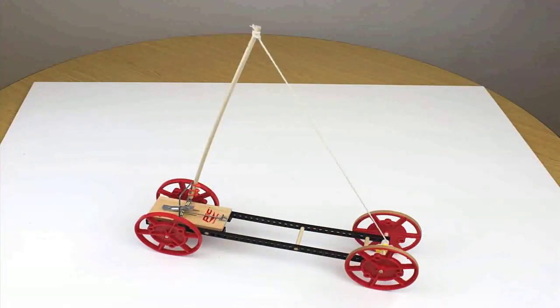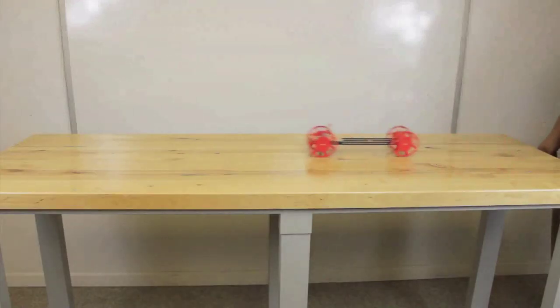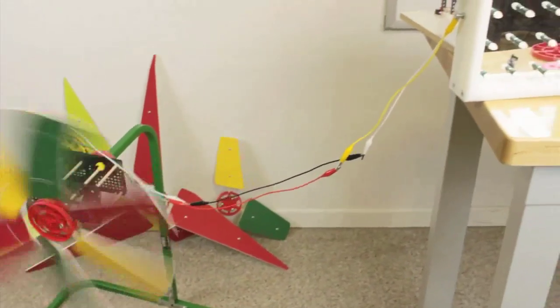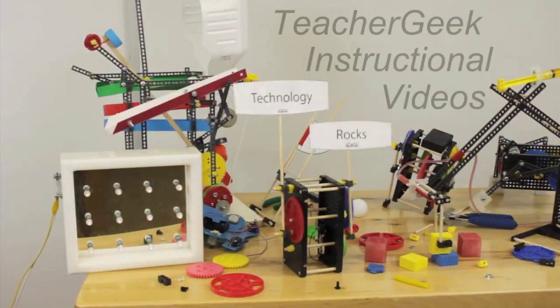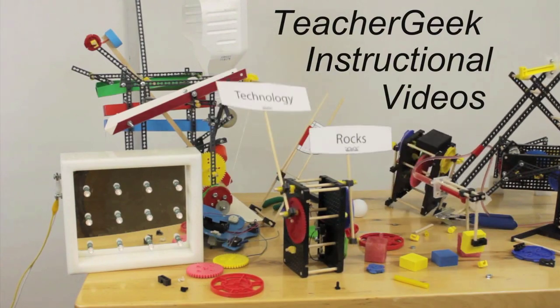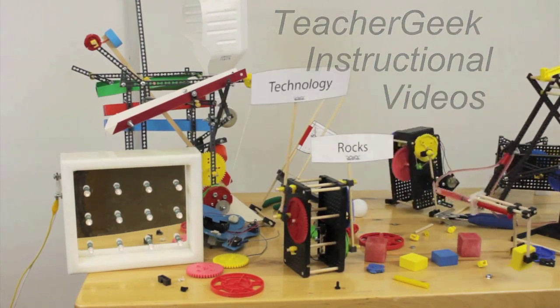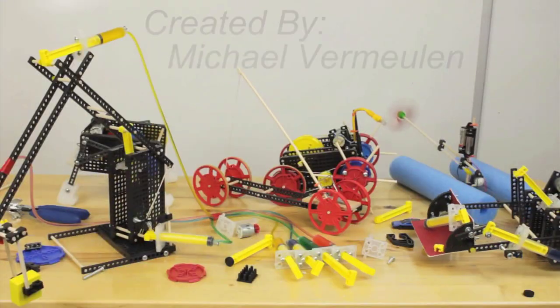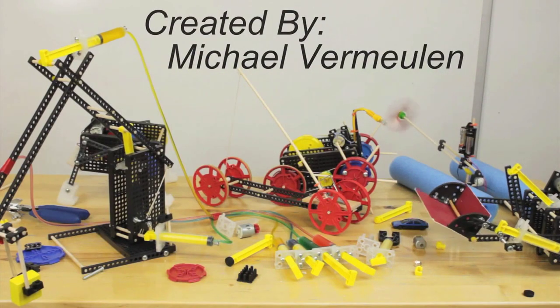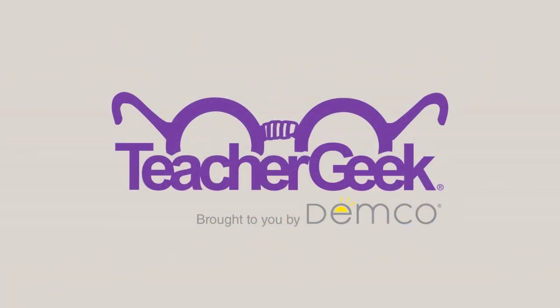Your mousetrap vehicle is complete. Now test it. How fast does it go? How far can it go? Can it get over objects? See what it does and try to improve on it. Use your extra materials to re-engineer and design a better one. See what you can come up with. I'll see you next time.